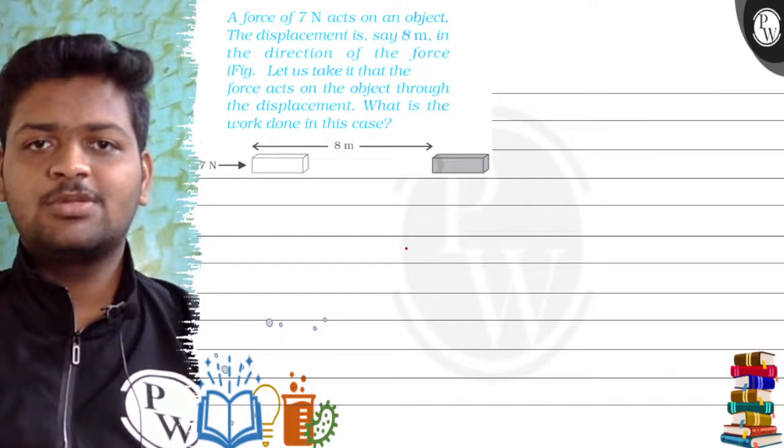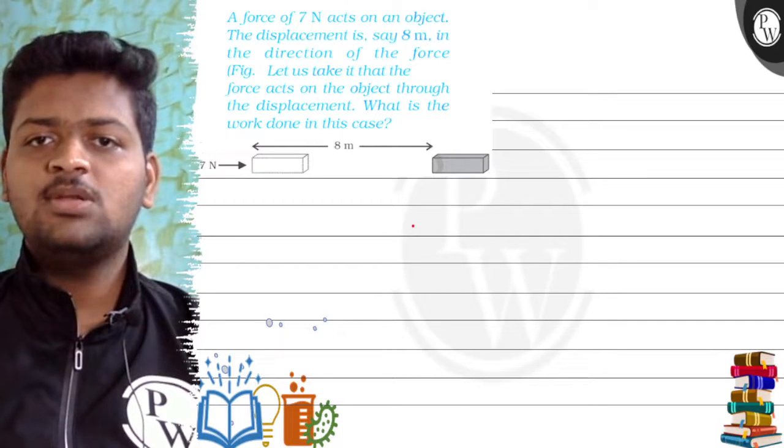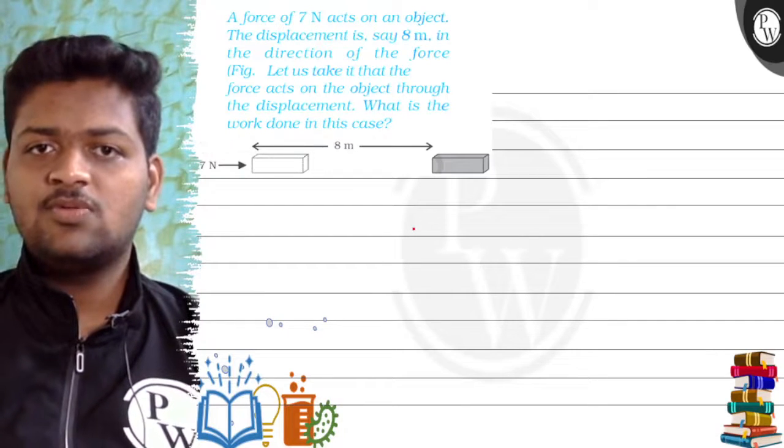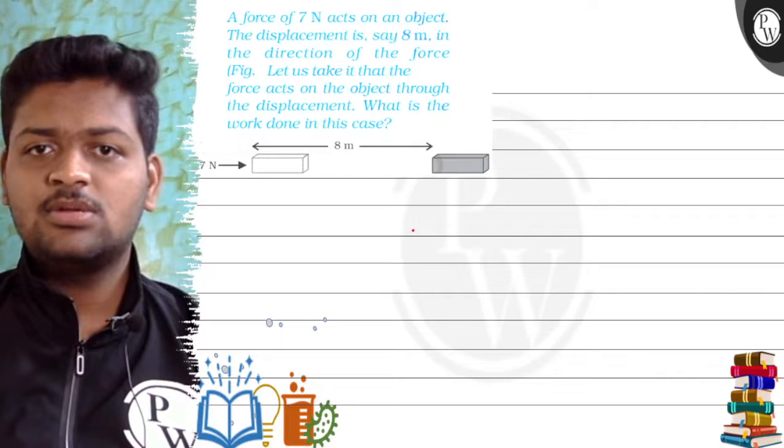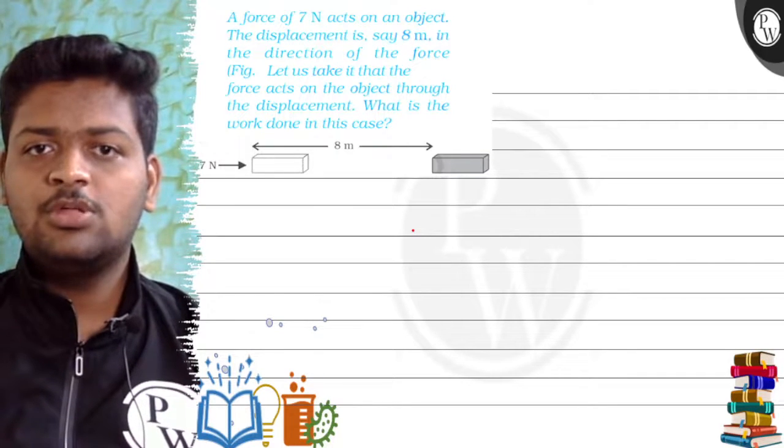Hello, let's see this question. A force of 7 Newton acts on an object. The displacement is say 8 Newton in the direction of the force. Let us take it that force acts on an object through the displacement. What is the work done in this case?